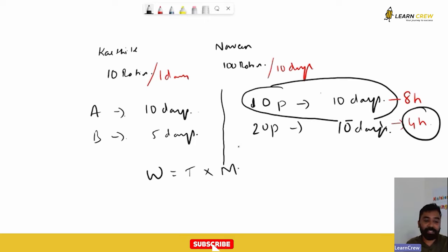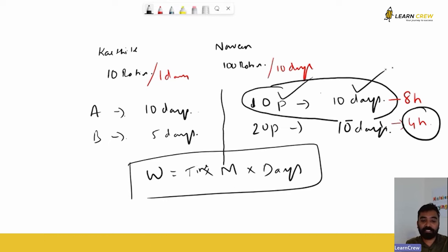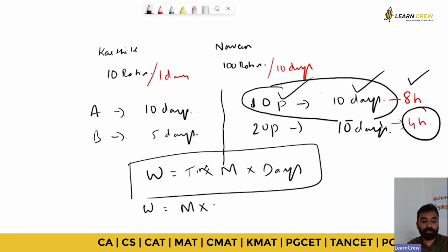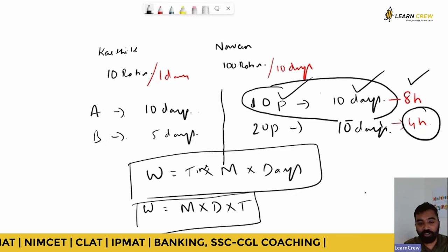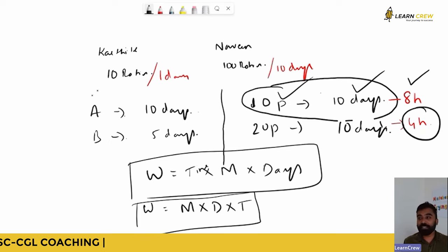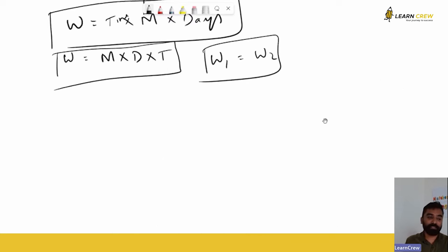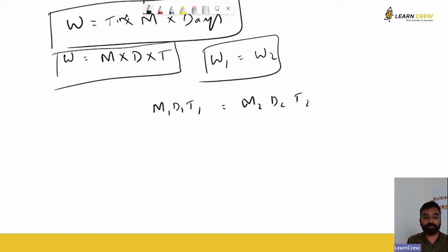Work done is nothing but: Number of People × Number of Days × Number of Hours. This becomes the generalized equation for Time and Work. If the work done by A and work done by B is the same, we can write it as M1 × D1 × T1 = M2 × D2 × T2.